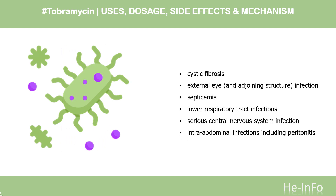Inhaled Tobramycin is indicated for the management of cystic fibrosis patients with Pseudomonas aeruginosa, but is not recommended in patients under 6 years of age, those with forced expiratory volume in 1 second (FEV1) less than 25% or greater than 80% predicted, or with Burkholderia cepacia.